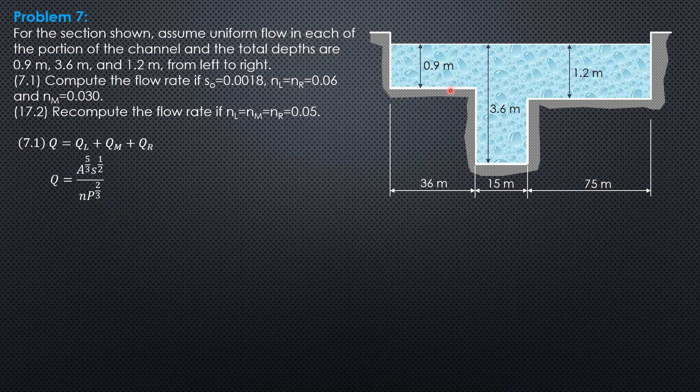The area at the left is 36 times 0.9, 32.4 square meters. The wetted perimeter of the left section is 36 plus 0.9 only. This is not treated as wetted perimeter; there is no contact with the surface. So perimeter is only 36 plus 0.9, so it is 36.9 meters.